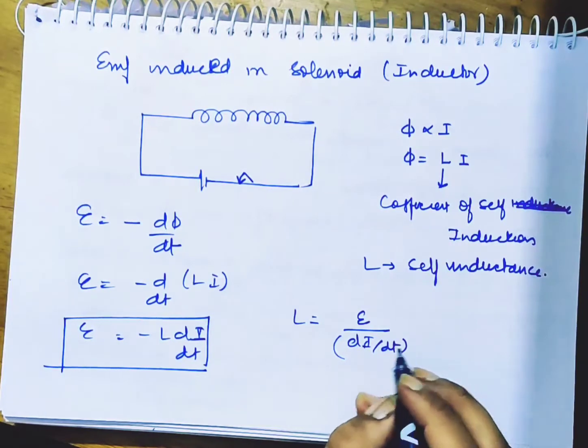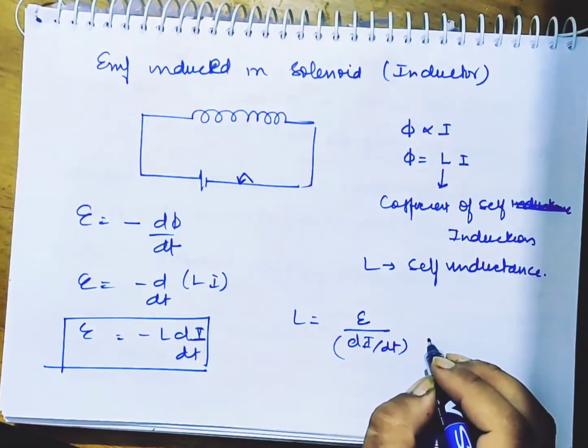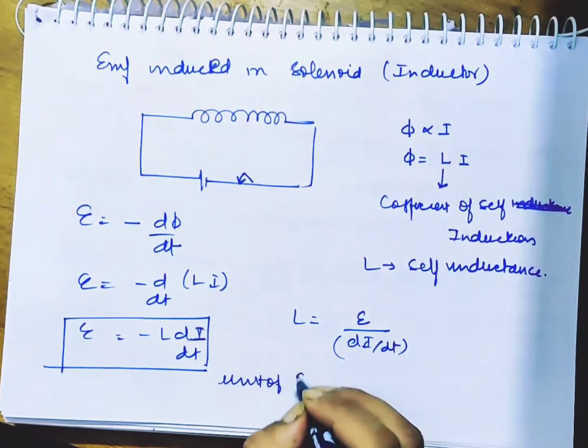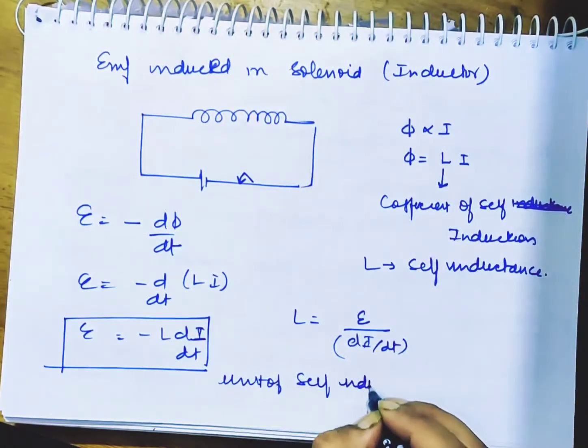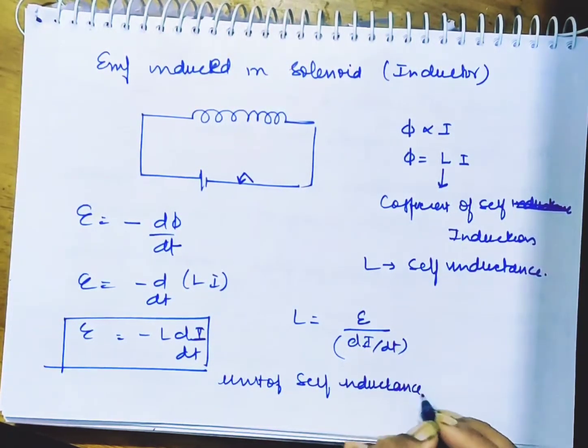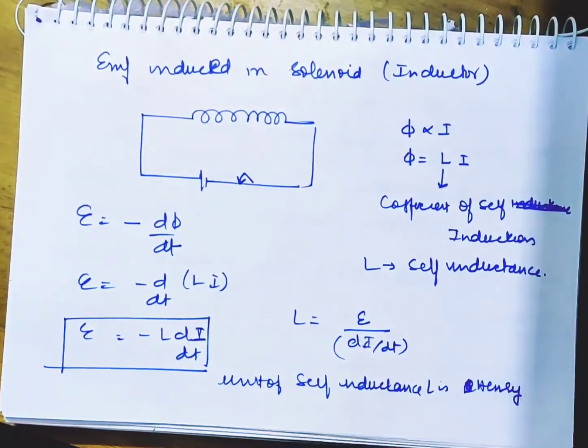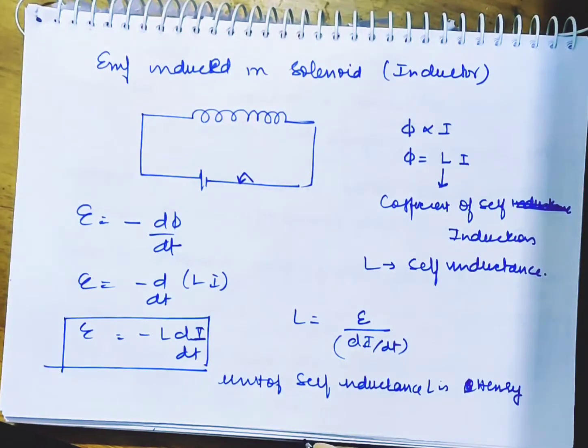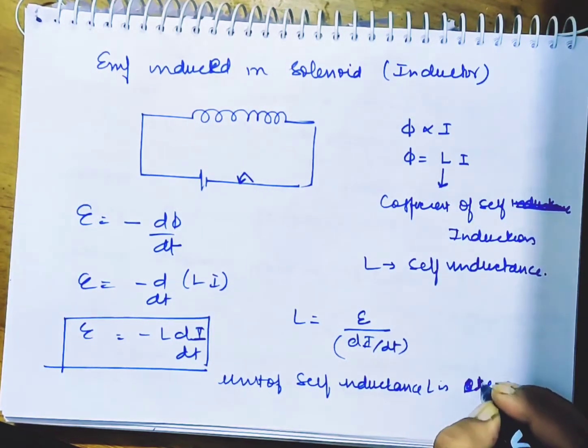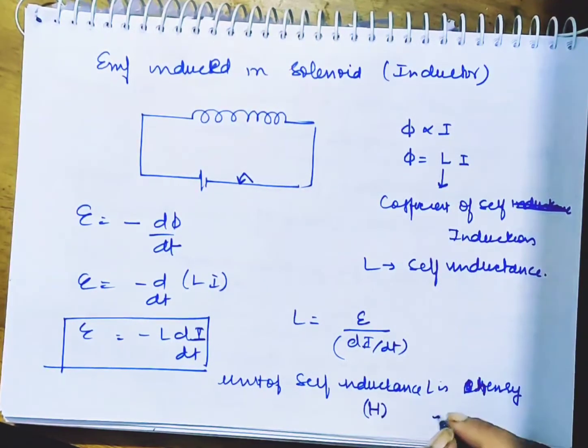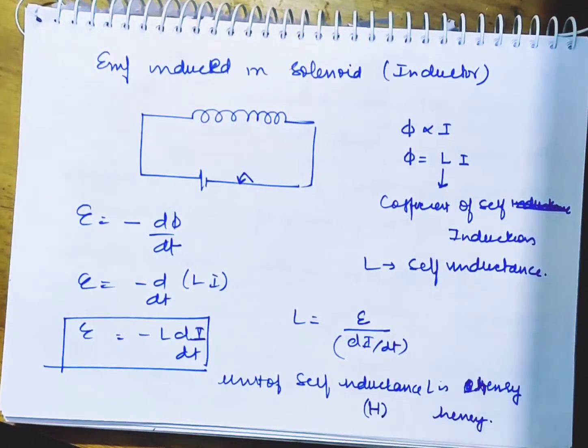Let us write this. The unit of self-inductance L is Henry. This is Henry in SI. When we write the full name, we write it with a small letter. We have capital H as the unit symbol, and if you write the whole name, write it with small letter 'henry'.